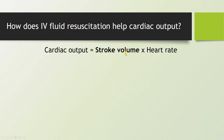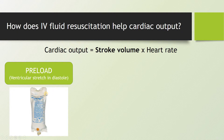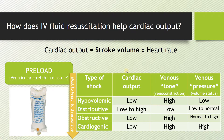We're going to focus on preload as the part of stroke volume manipulation most relevant to IV fluid resuscitation. When you hang a bag of lactated Ringer's to increase the patient's blood pressure, what you're really doing is trying to improve cardiac output by increasing ventricular stretch in diastole with a fluid bolus, so that stroke volume and then cardiac output will follow. In hypovolemic patients, restoring circulating volume raises venous pressure and cardiac output follows.